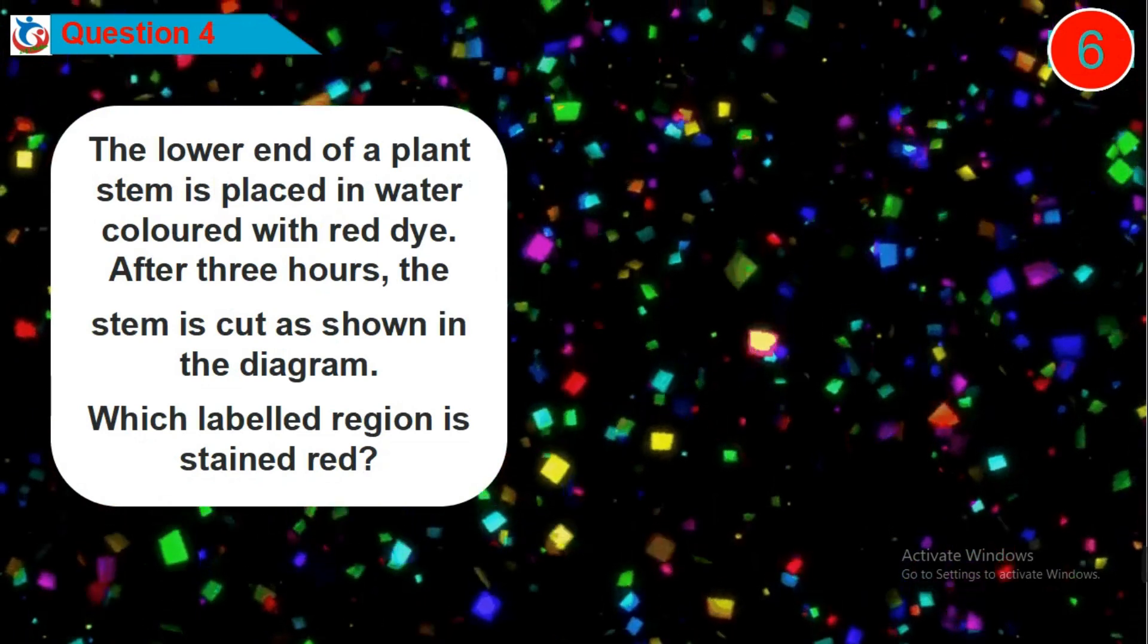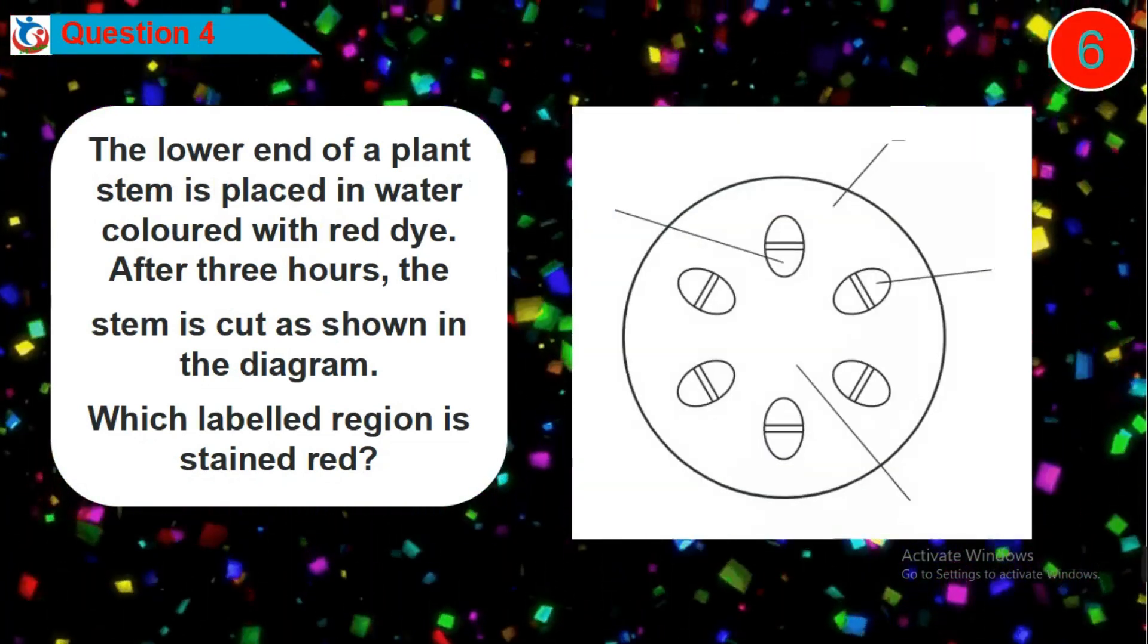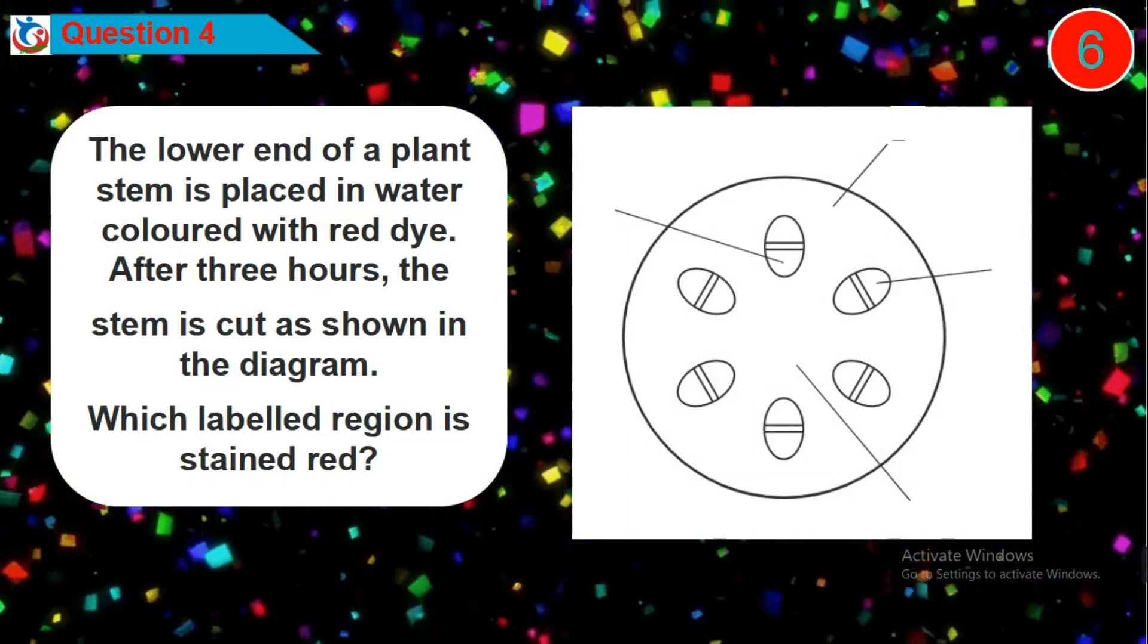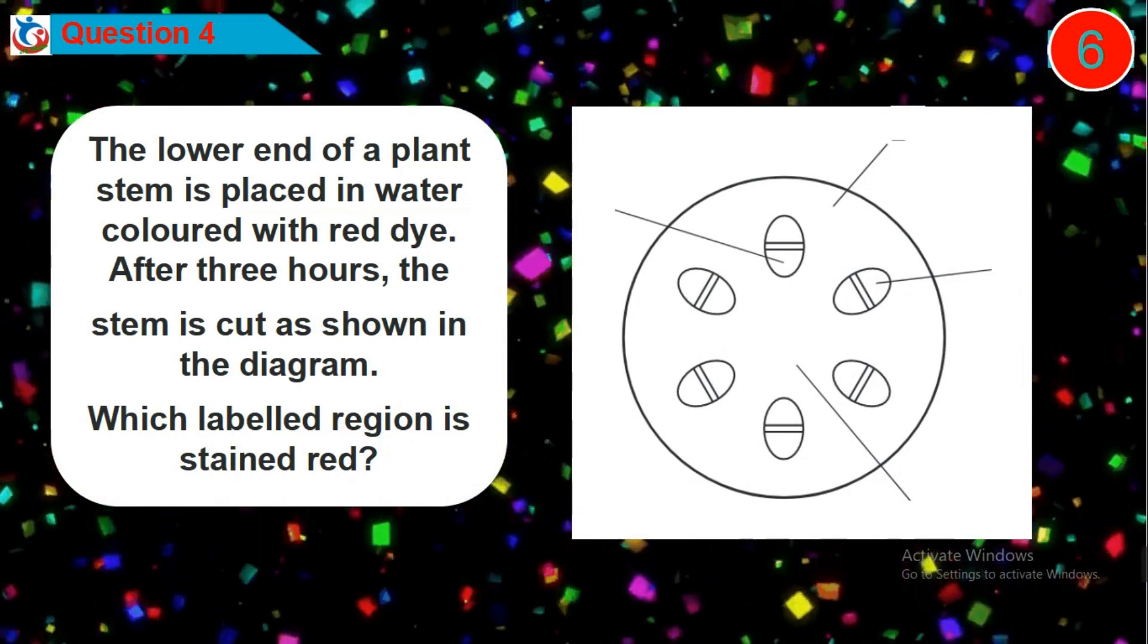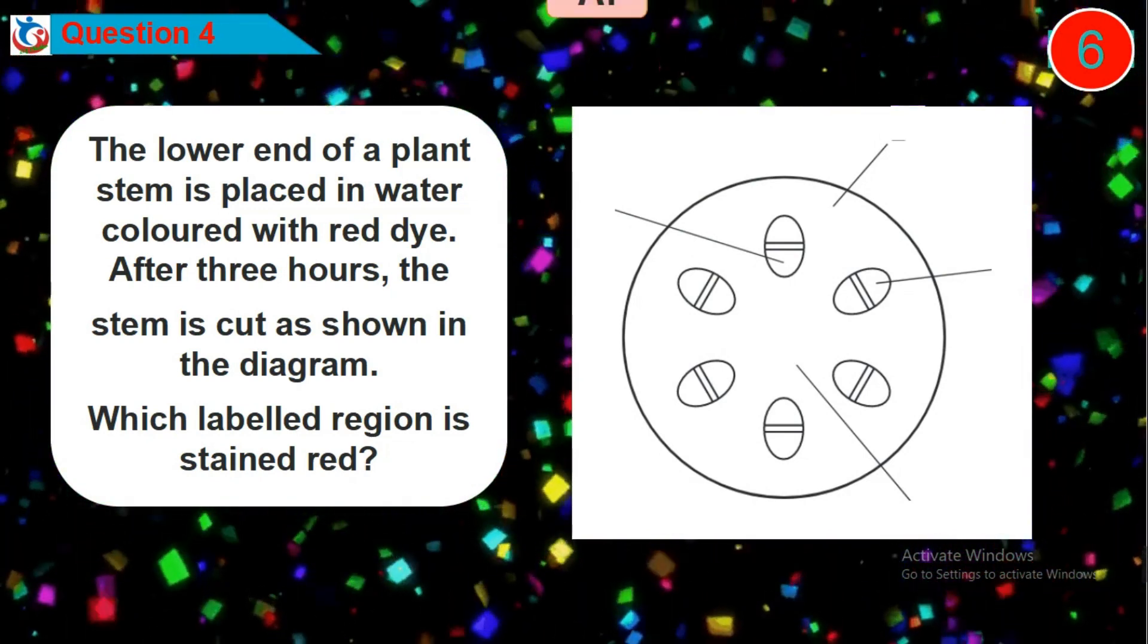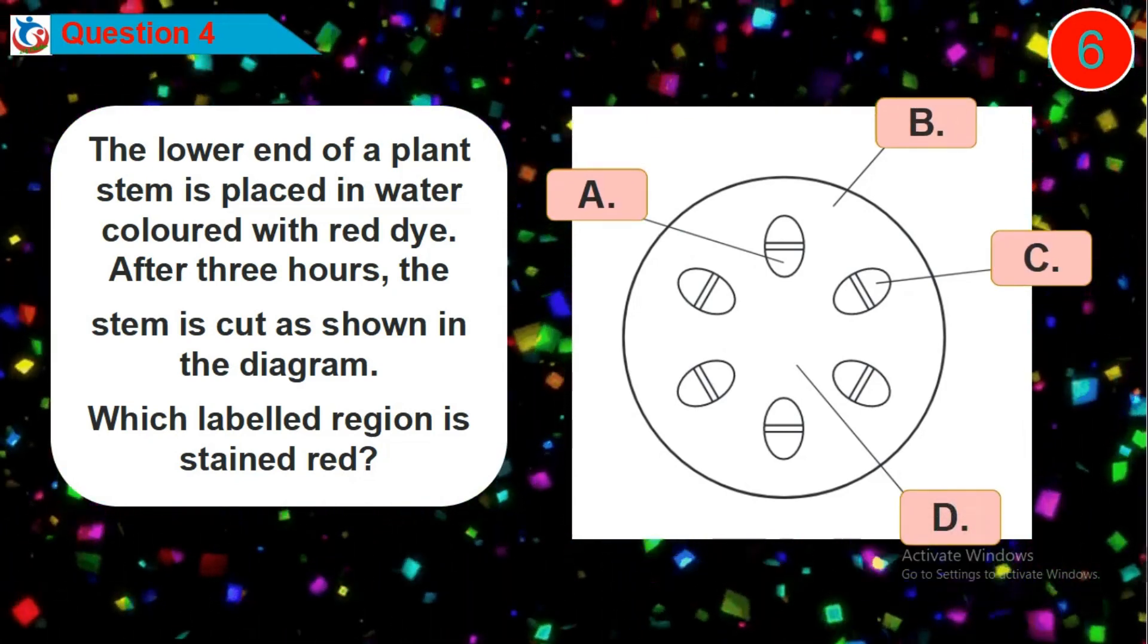Question 4. The lower end of a plant stem is placed in water colored with red dye. After 3 hours, the stem is cut as shown in the diagram. Which labelled region is stained red? Is it option A, B, C or D?